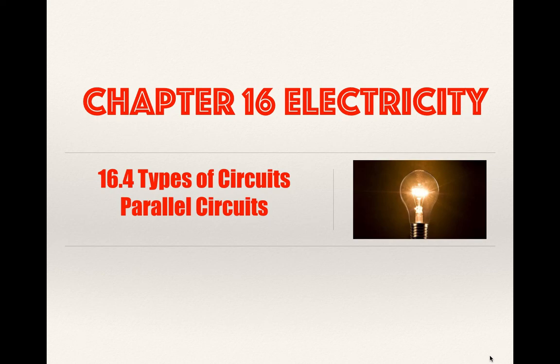This is the last part of the chapter, section 16 on types of circuits. We learned in the last lecture about series circuits — those were circuits that had only one path for the electrical current to follow.